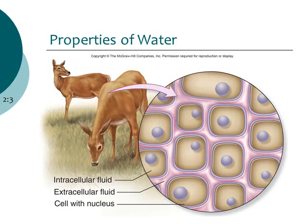In organisms — here we have deer — they're made up of cells. Remember, the cell is the smallest, most basic unit of life. Inside of the cell we have what's called cytoplasm, that's the intracellular fluid. It's inside the cell and it's mostly made up of water — it's kind of a gelatin-like substance. Outside of the cell we have extracellular fluid, which can also be a gel-like substance, but again it's based on water.